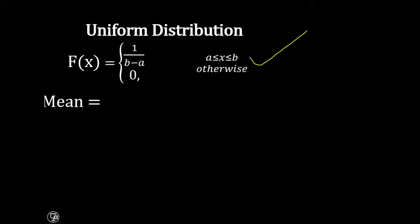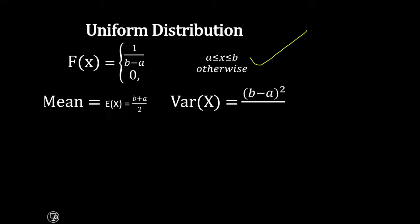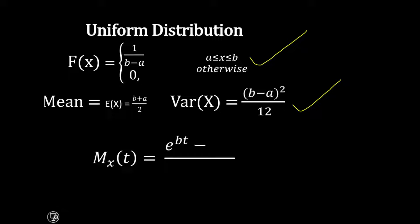The mean is given as E of x equals b plus a divided by 2, and the variance is b minus a raised to power 2 divided by 12. The moment generating function is exponential bt minus exponential at, divided by t into bracket b minus a. This is the moment generating function of a uniform distribution.